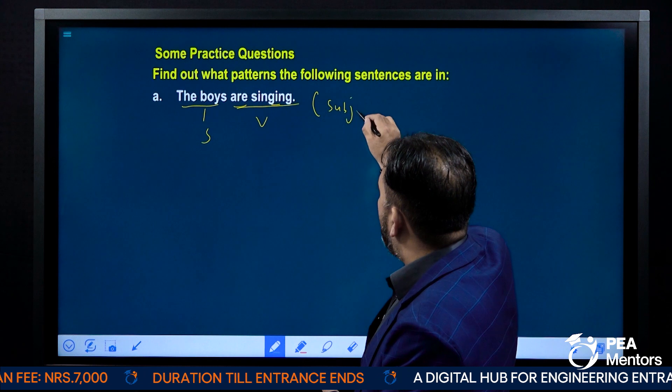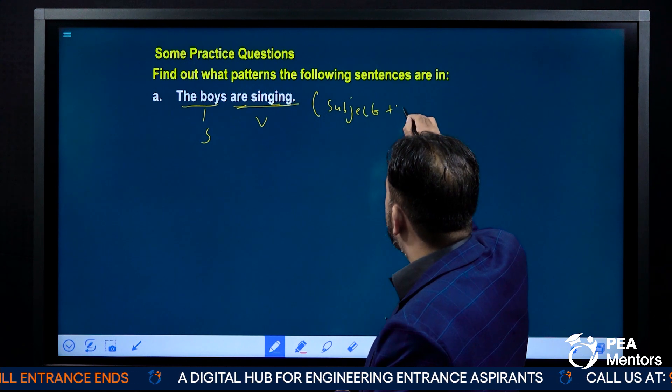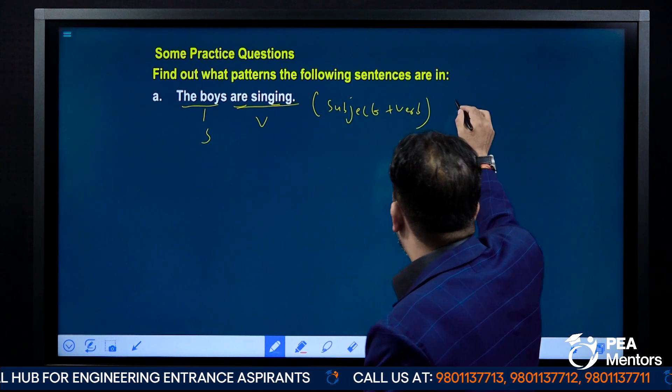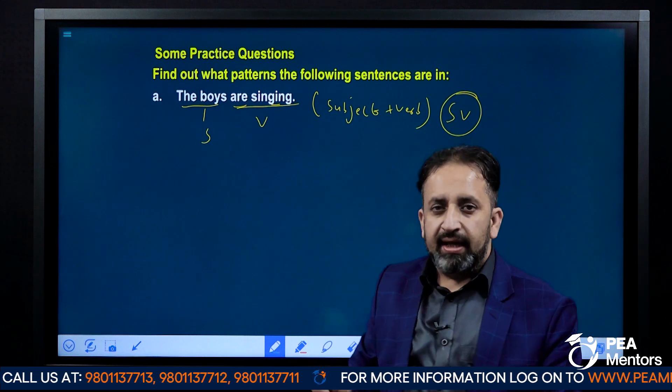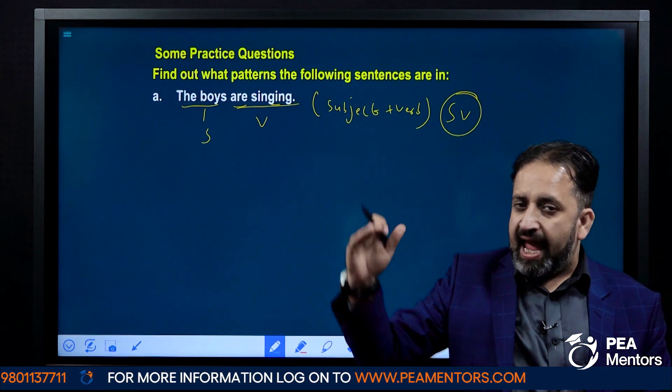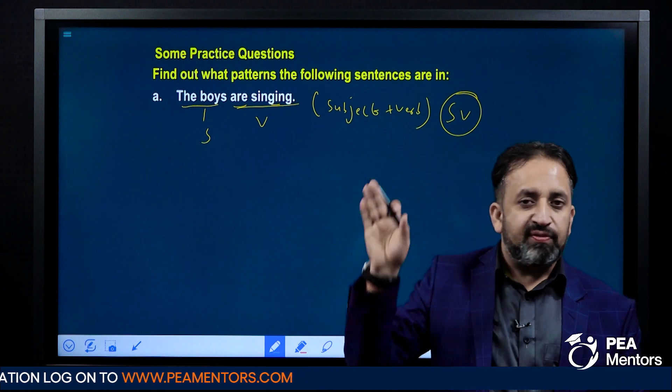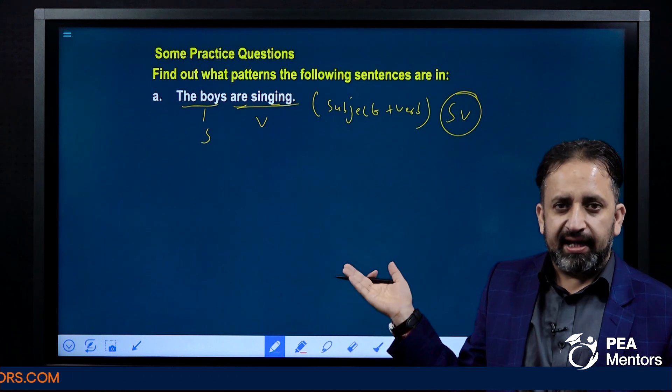Subject plus verb means S+V pattern, and this was the pattern that we discussed at the beginning. So this is the first pattern, isn't it? So clear.